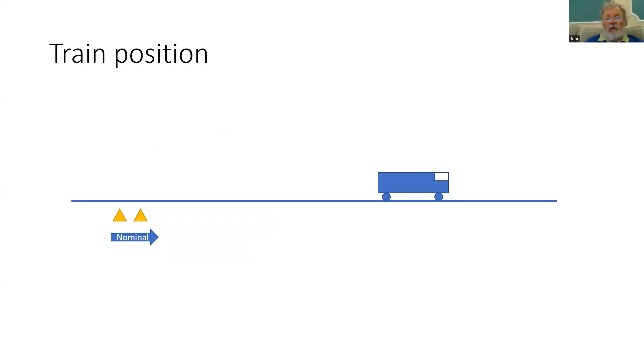So how is the train position reported to the trackside? Well, in this example, we have a balise group which the train has passed over and it passed over in the nominal direction. The train will report the estimated distance from the reference balise in that balise group to the front of the train. And it will report that as a variable D_LRBG. LRBG is the last relevant balise group.